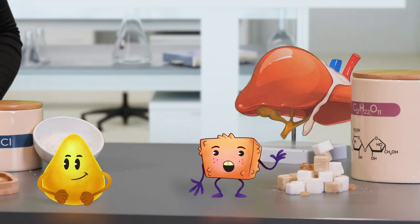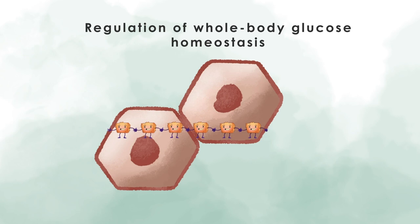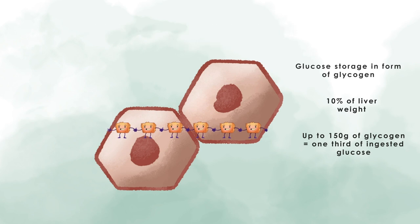The liver also has a very important role in regulating whole-body glucose homeostasis. As already mentioned, it has the ability to store glucose in the form of glycogen. Hepatic glycogen content varies during the day and constitutes up to 10% of the weight of the liver in humans. Since the liver weighs about 1.5 kg, that is up to 150 grams. Up to one-third of the glucose that we ingest during the day ends up stored here.